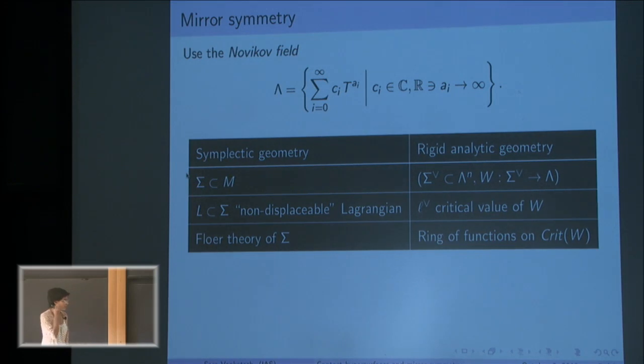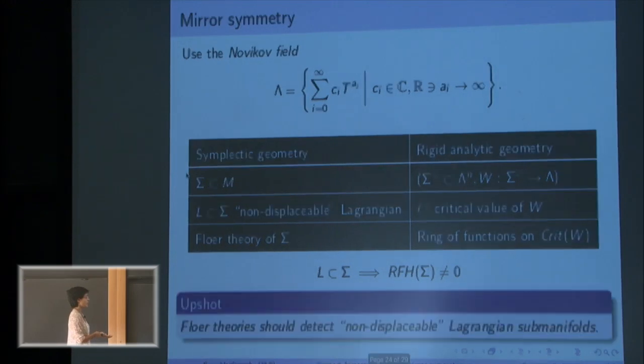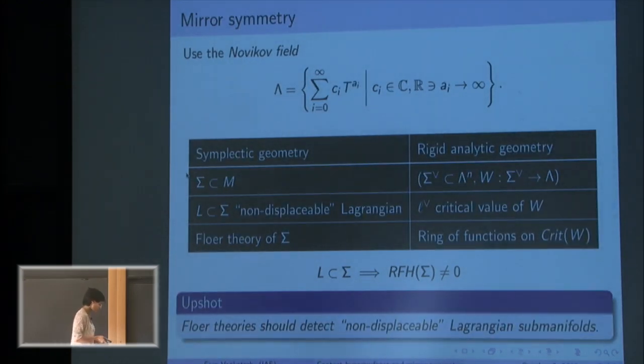So this is actually a bit baffling to me, but let's see what it tells me. It tells me that well, on this side, if W has critical points this thing is non-trivial, and the mirror statement is that if my hypersurface contains a non-displaceable Lagrangian, then my Floer theory is non-trivial. So mirror symmetry tells me that Floer theories, these theories built to detect dynamics, should detect these non-displaceable Lagrangian submanifolds as well.